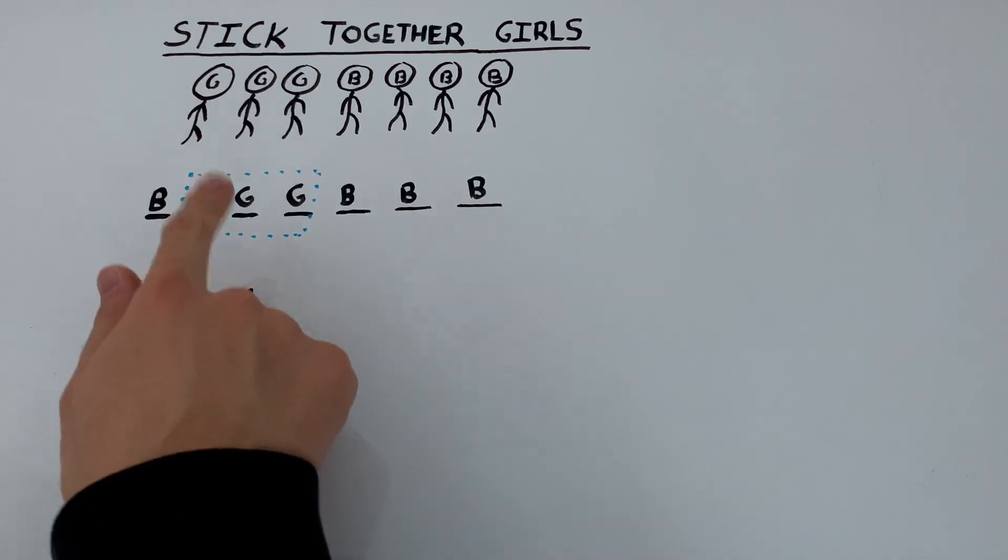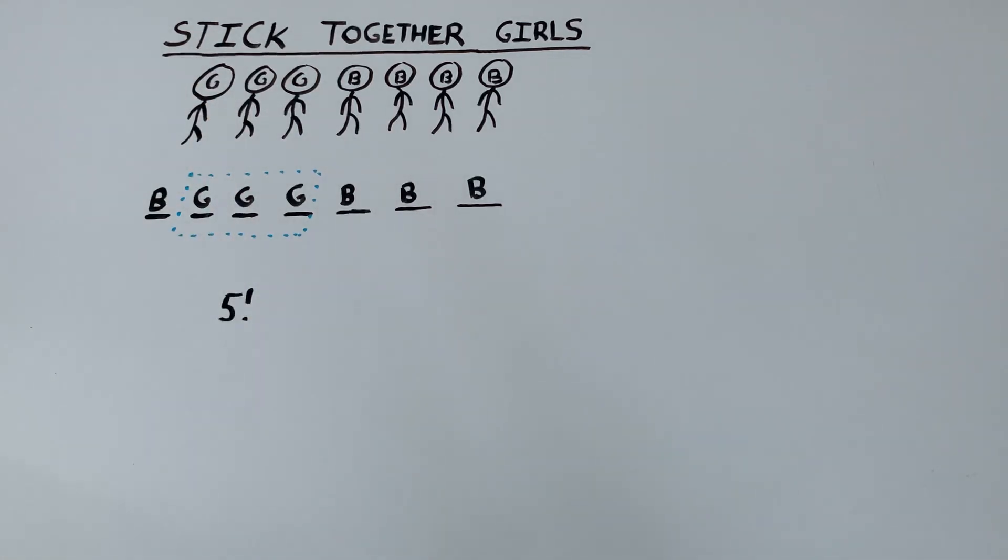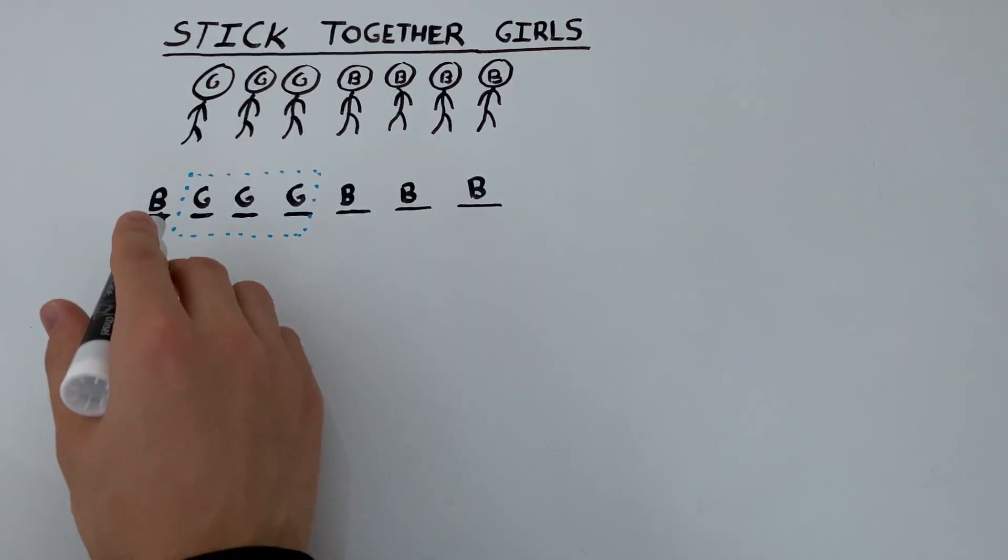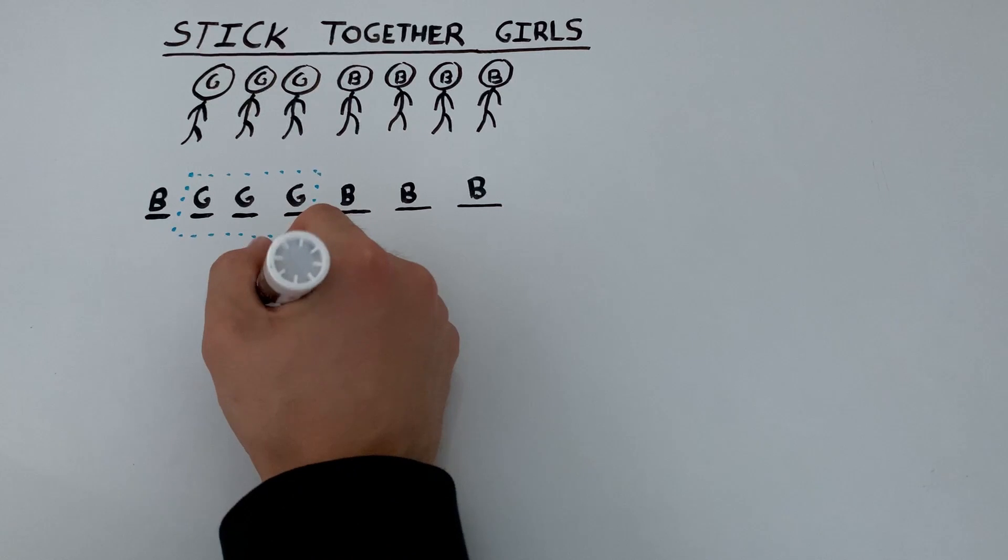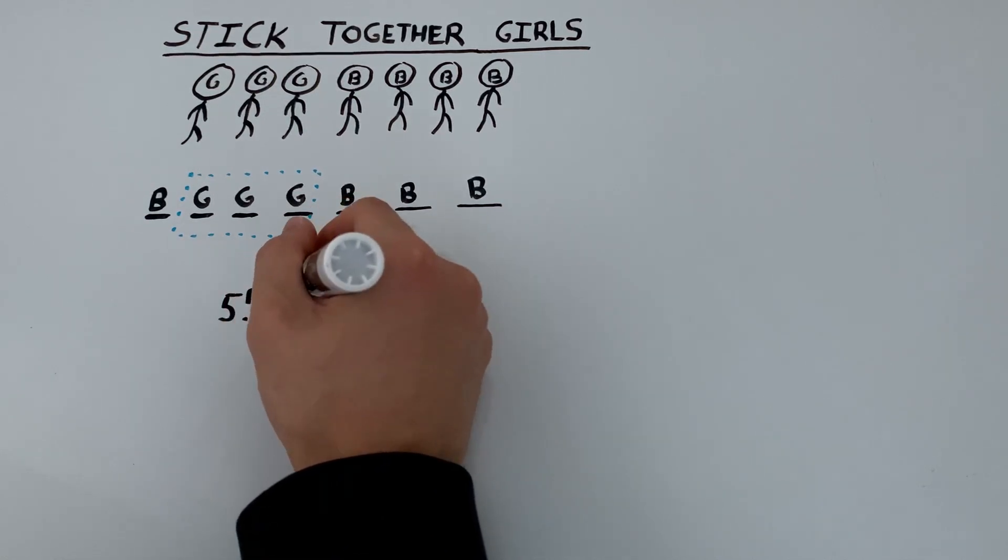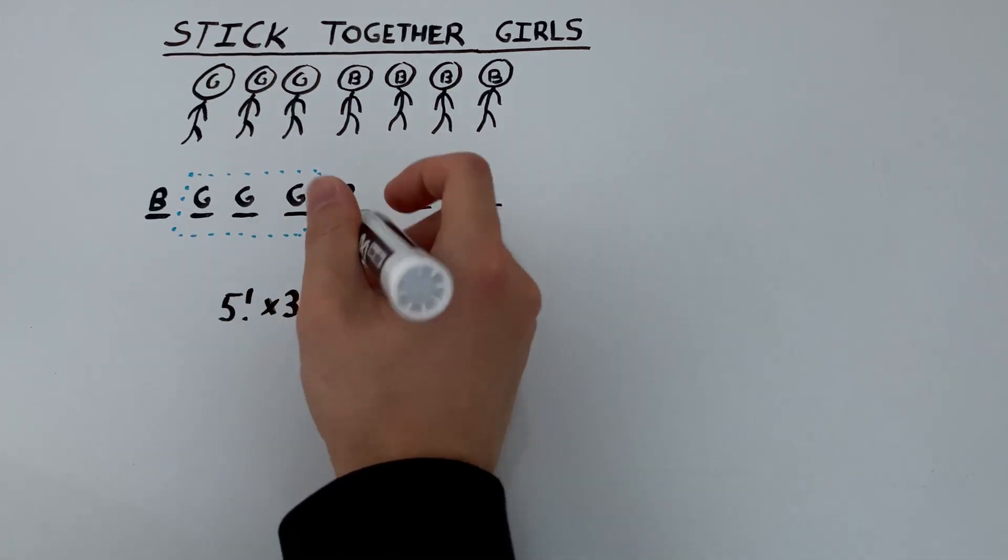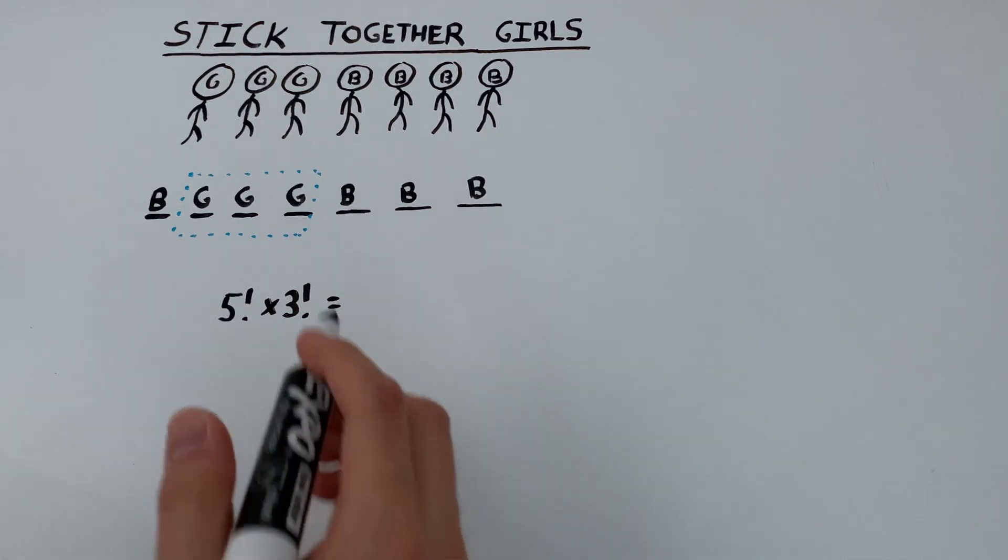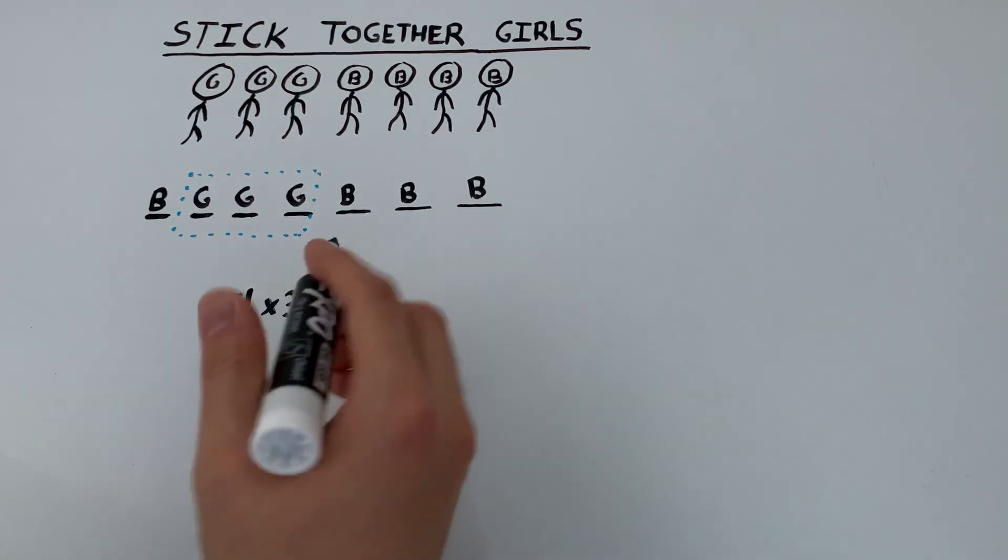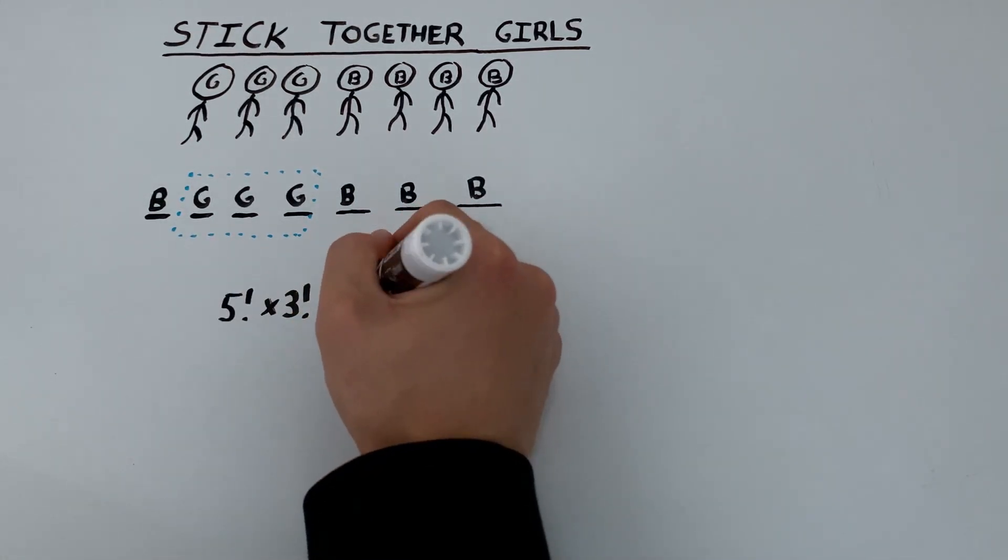Because within the block itself, the girls can actually be arranged in many different ways. Since we have three girls in this block, they can be arranged in three factorial ways. And this gives the final answer of five factorial times three factorial, which is seven hundred and twenty.